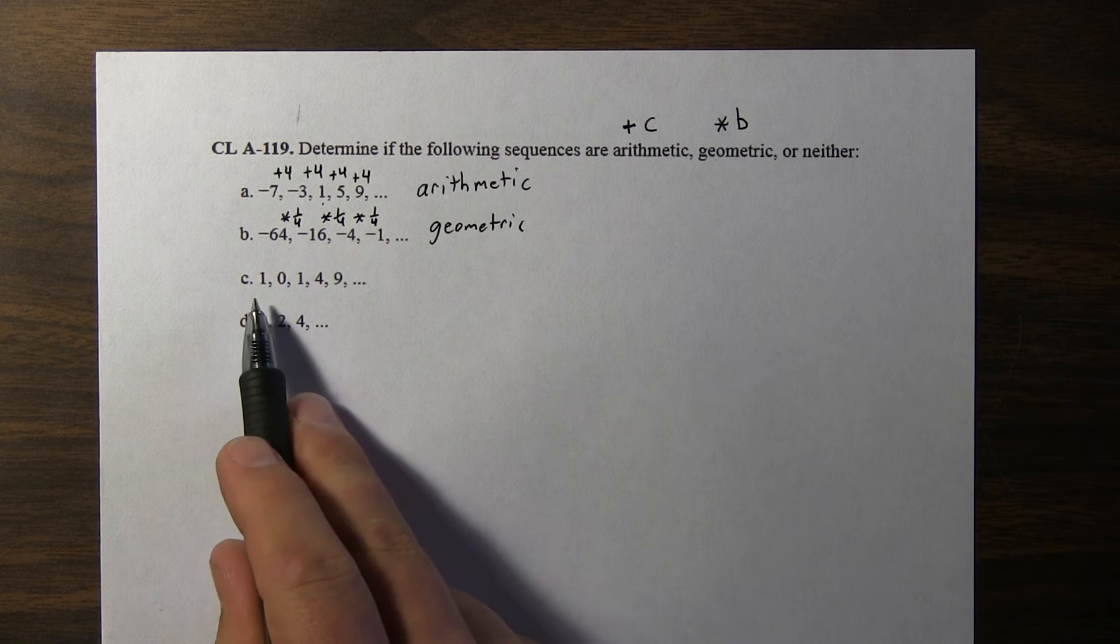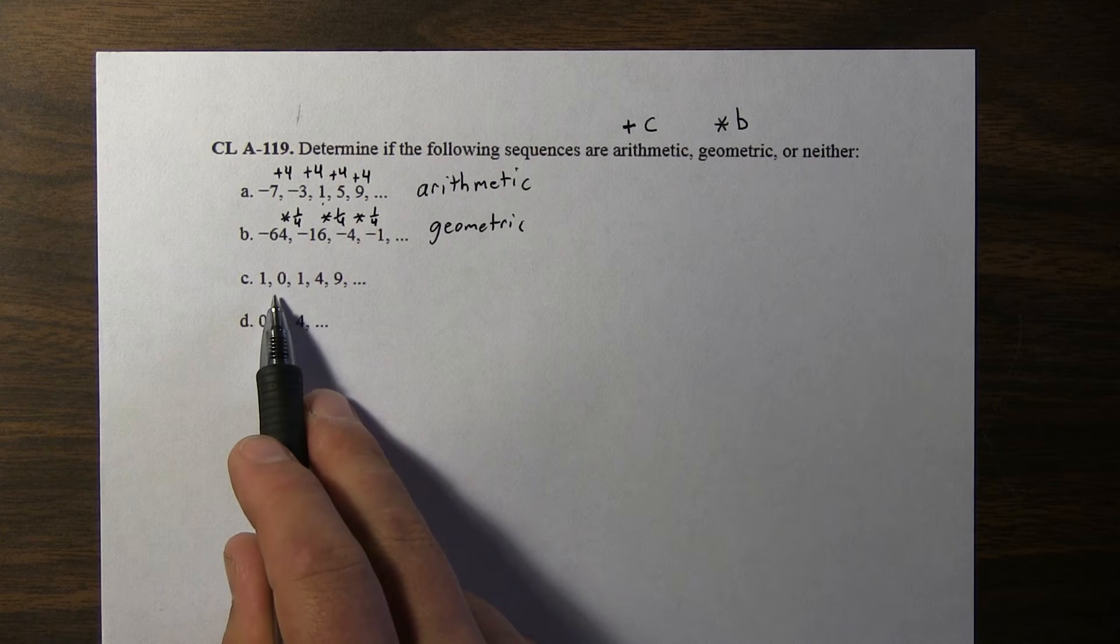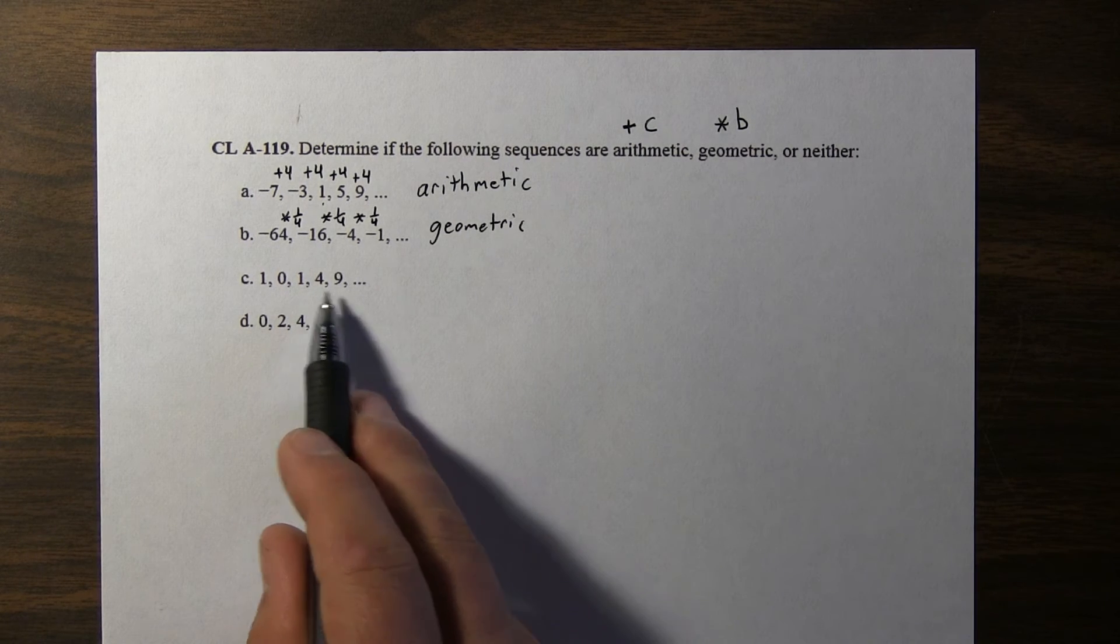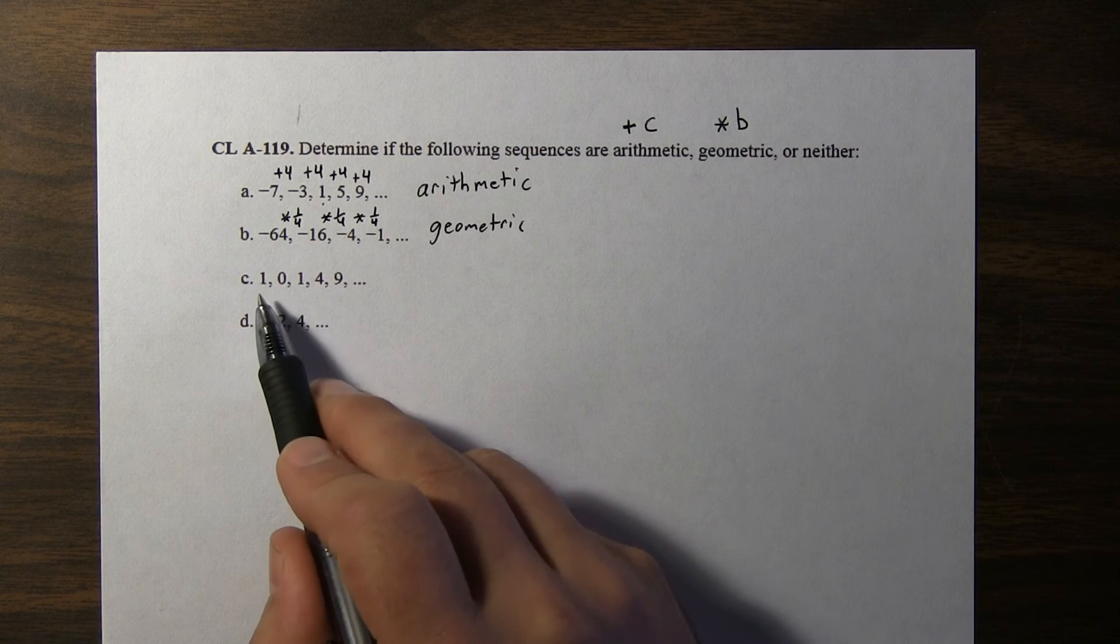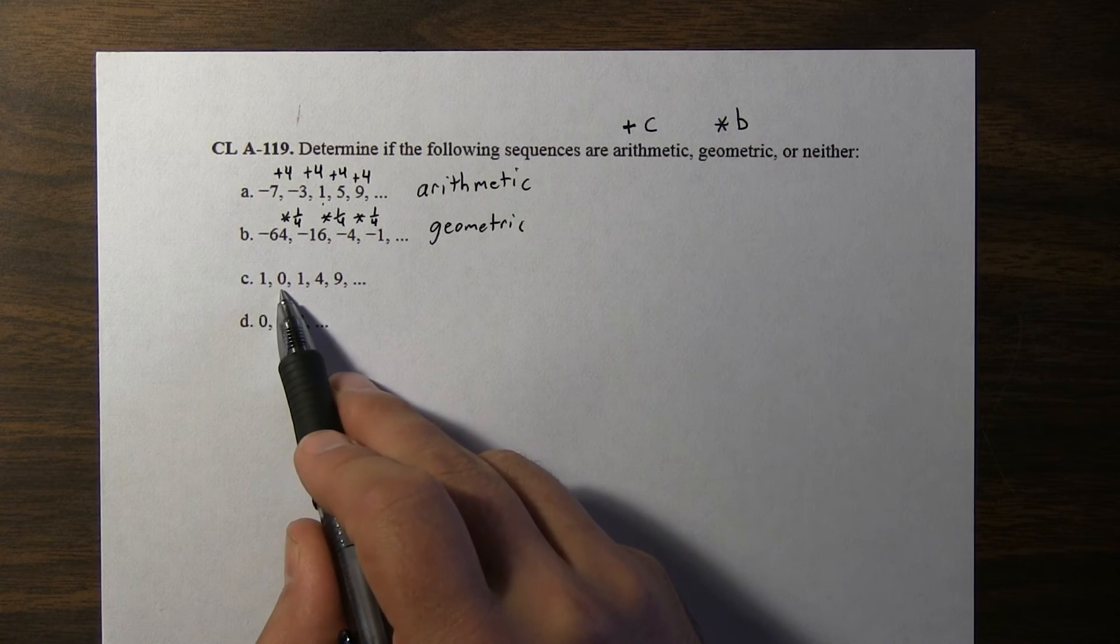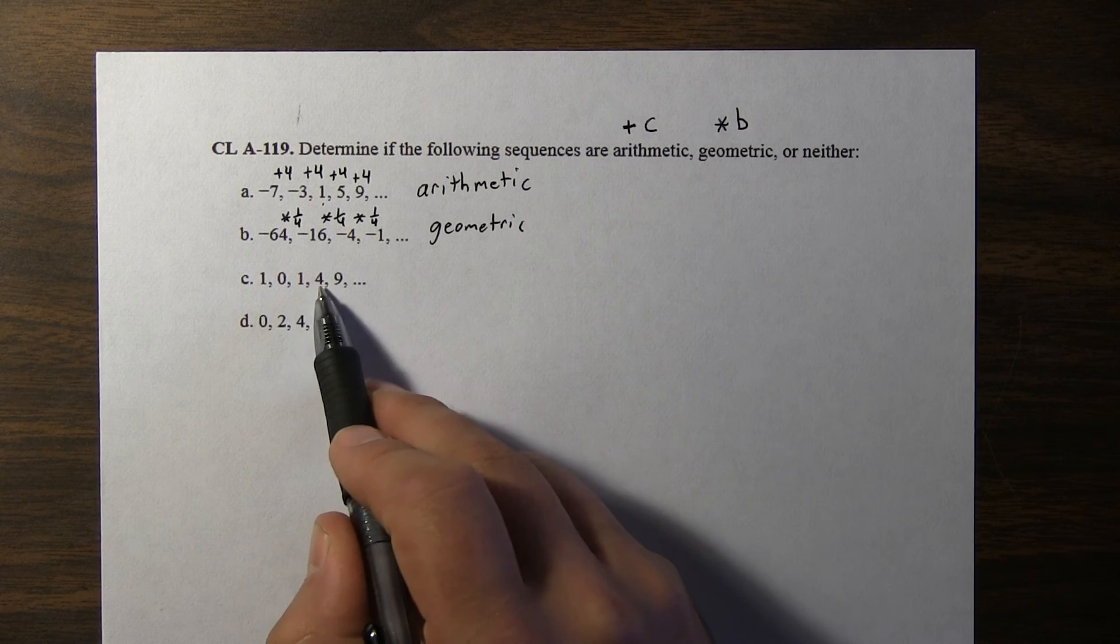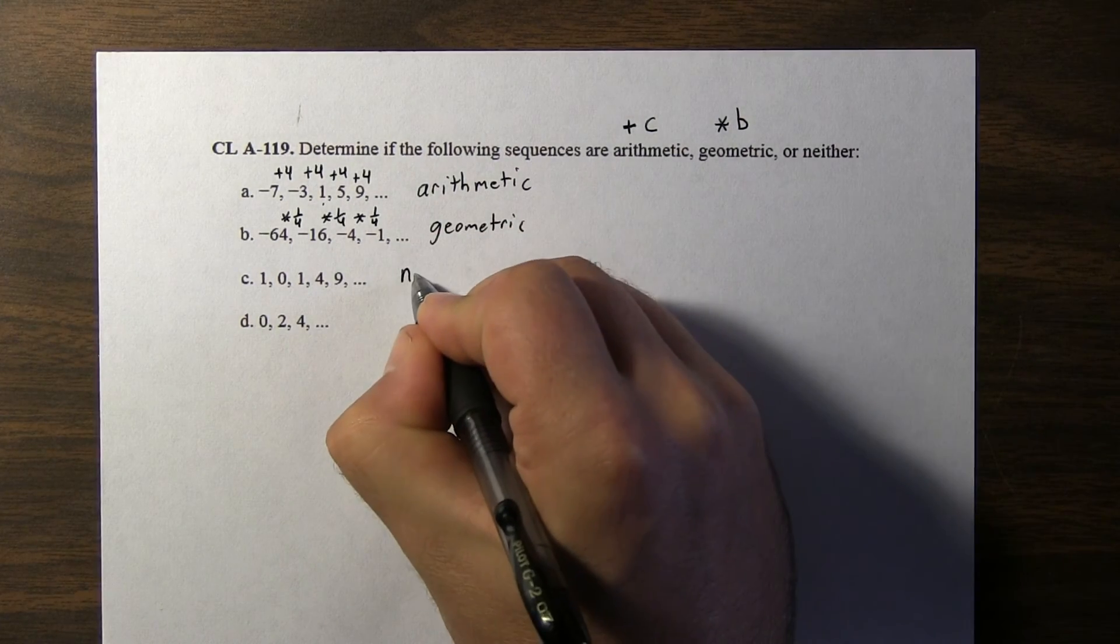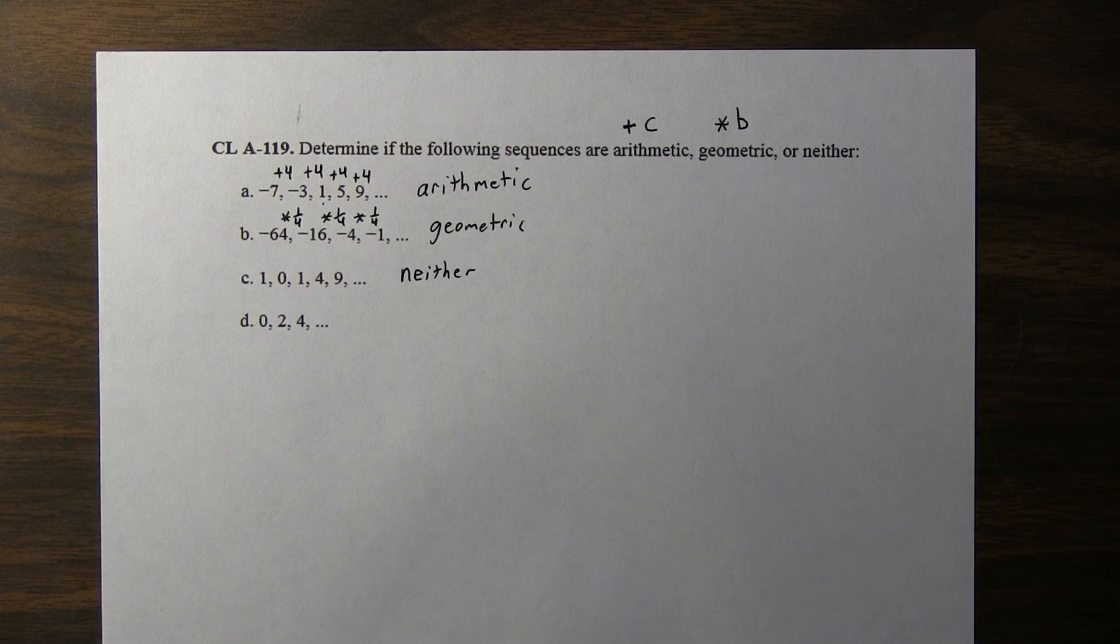On the next one, 1 plus negative 1 is 0. But plus another negative 1 wouldn't get you a positive 1. And furthermore, 1 plus negative 1 doesn't get you a 4 or a 9. So it's not arithmetic. Let's see if it's geometric. 1 times 0 is 0, so 0 times 0 does not equal 1, and that doesn't equal 4. This is neither, since there's not a constant that can be added or multiplied to each term to find the next term.